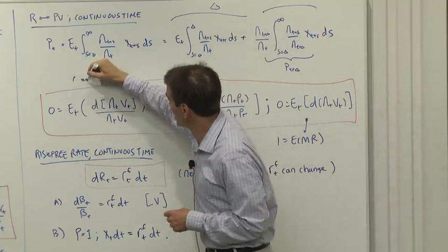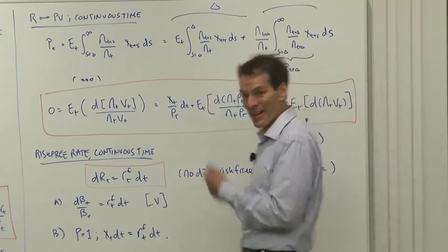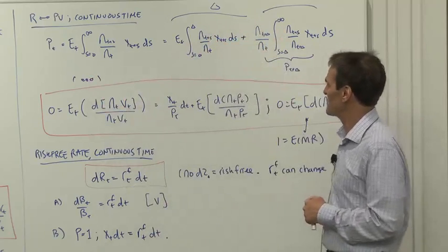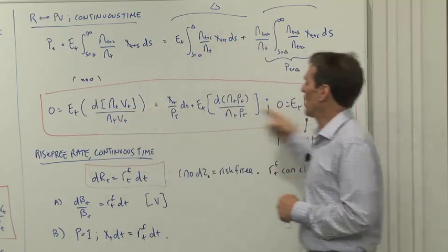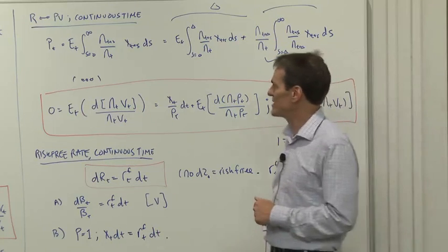Tomorrow, I'll apply the famous dot, dot, dot operator, by which I don't show you all the algebra, and you go read that in the notes. But you take that, and then a couple more steps, you get to our expression for the equivalent of 1 equals E of mR in continuous time.